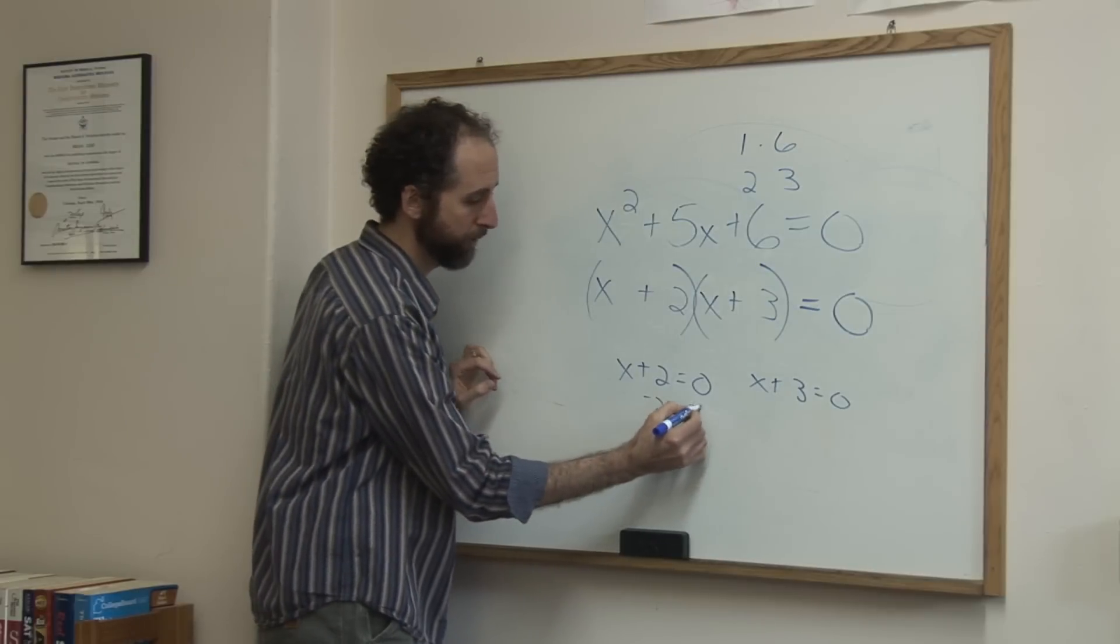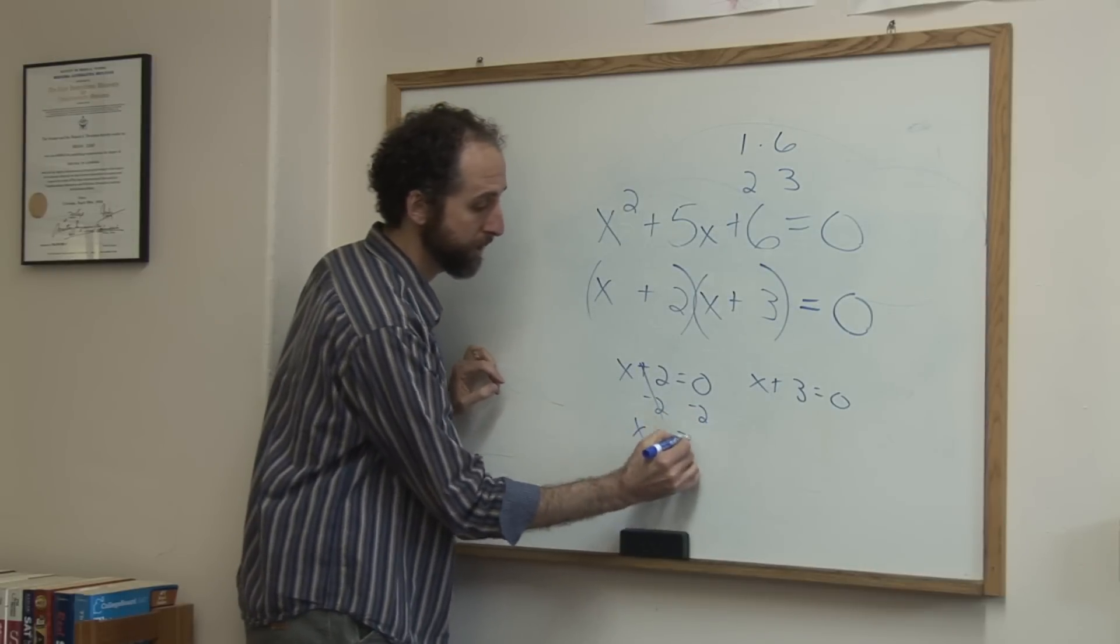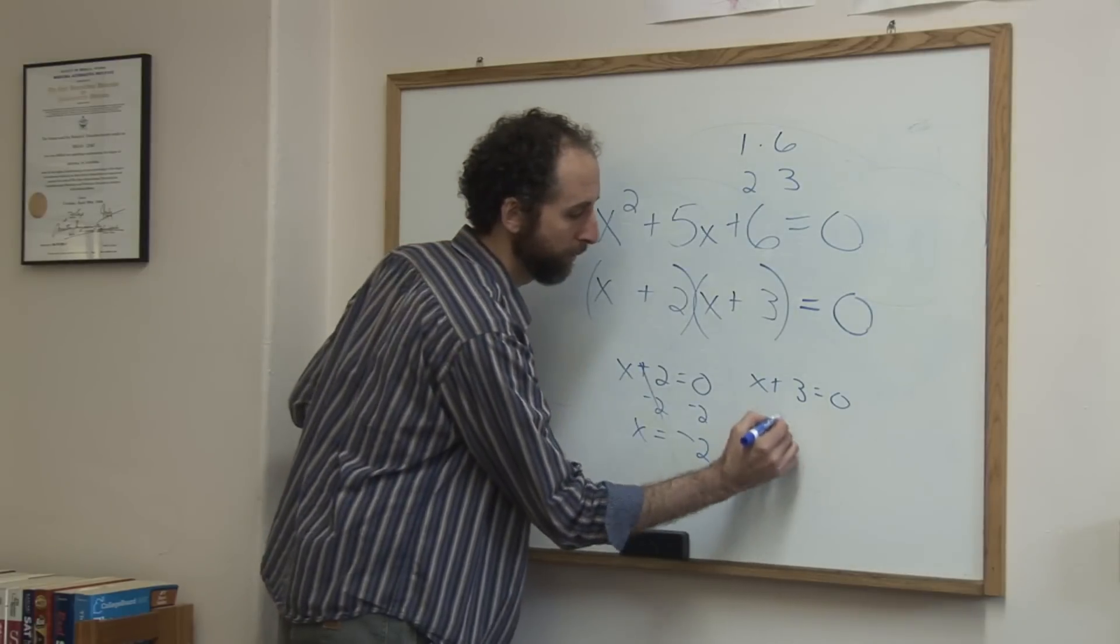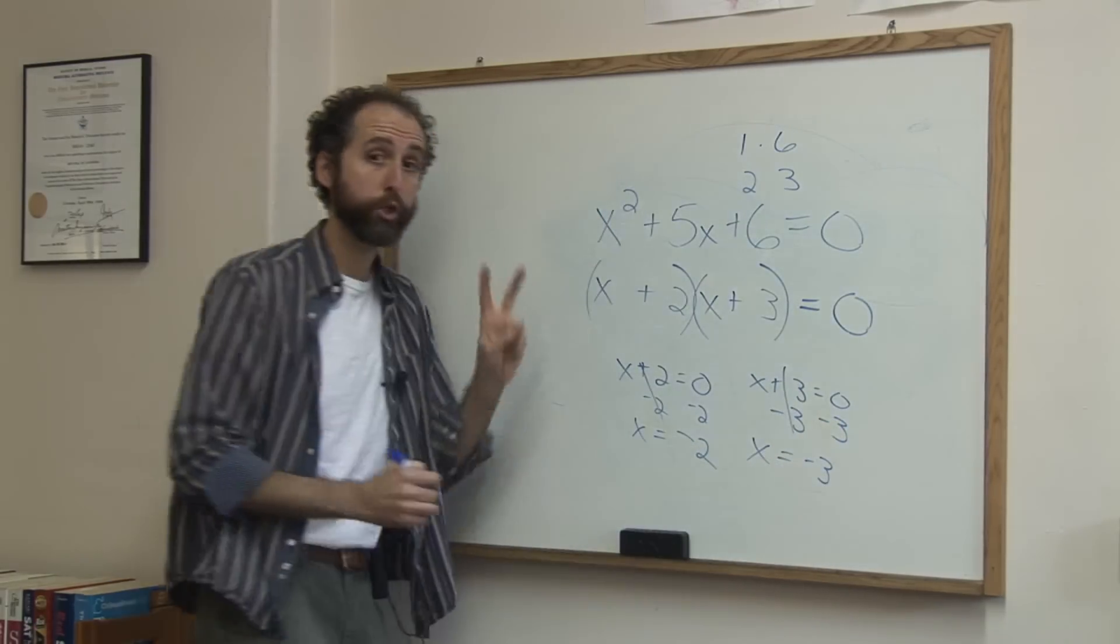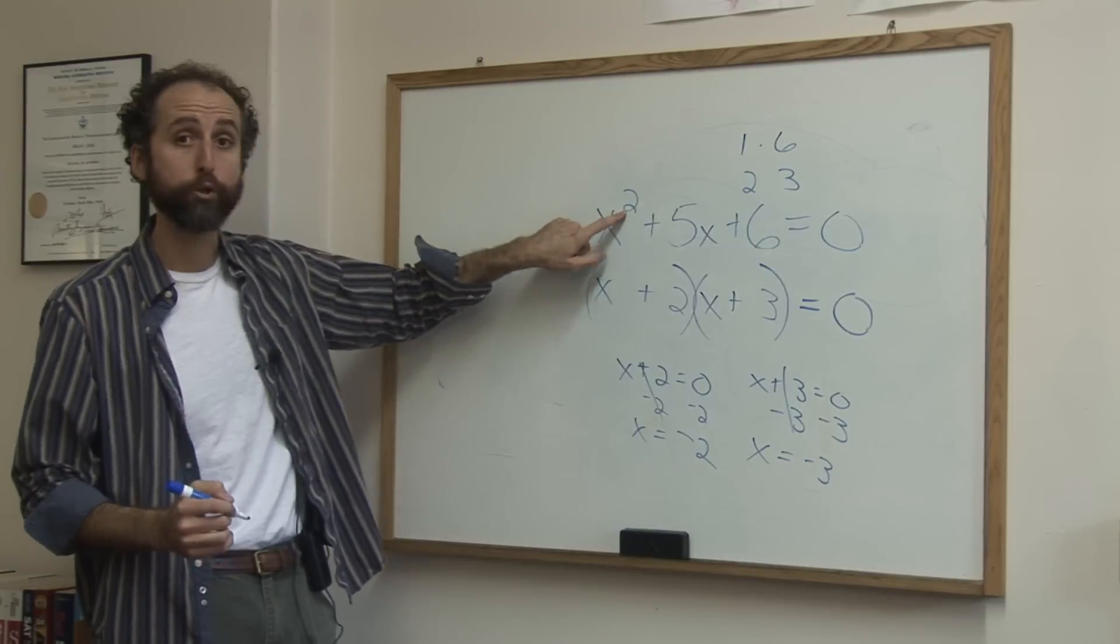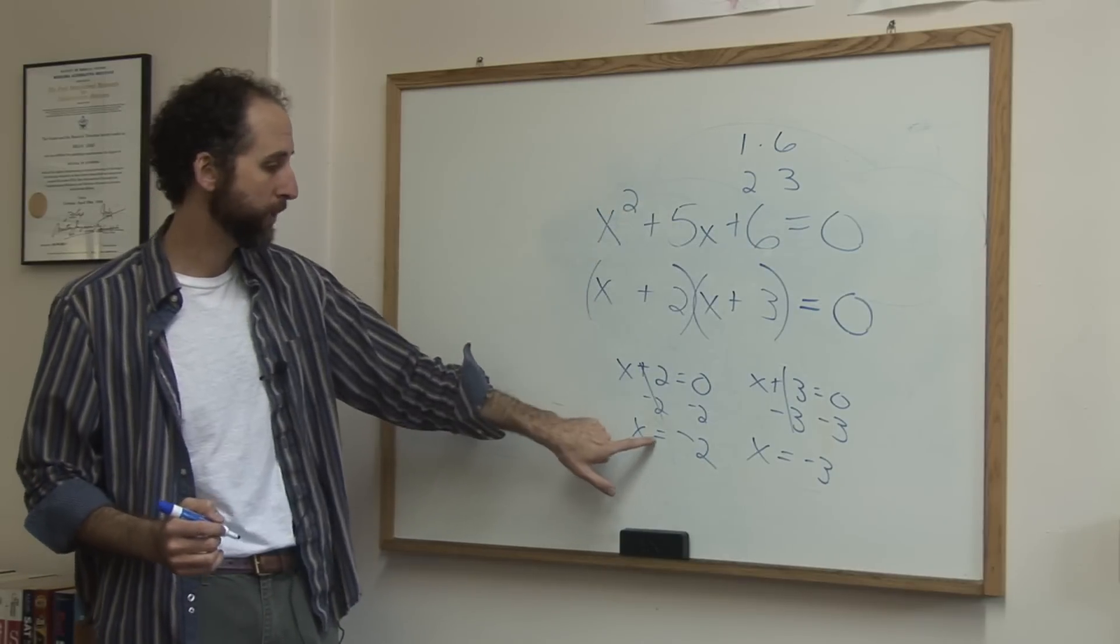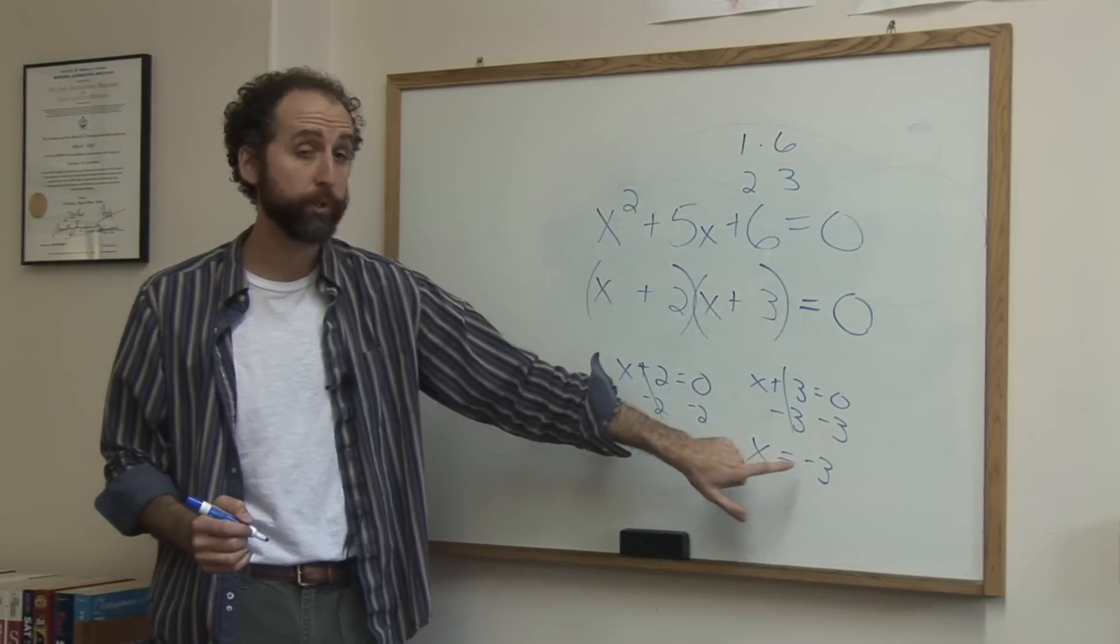So solve these, we get x is negative 2. Solve this one, we get x is negative 3. So the two solutions for this quadratic polynomial are x equals negative 2, x equals negative 3.